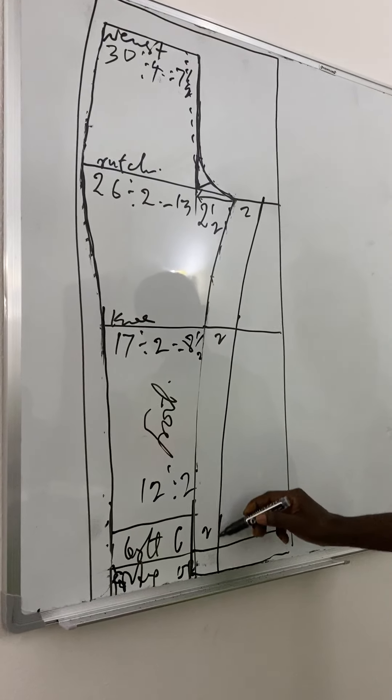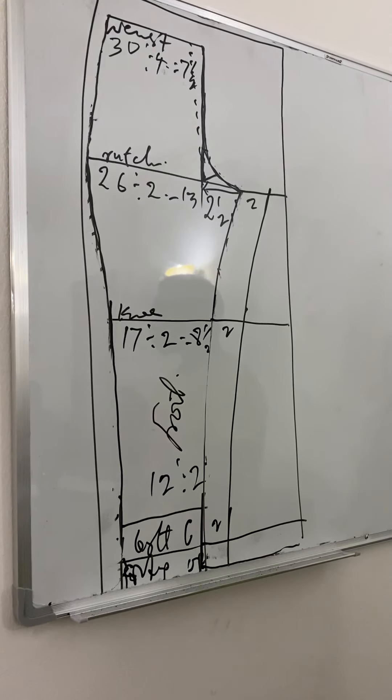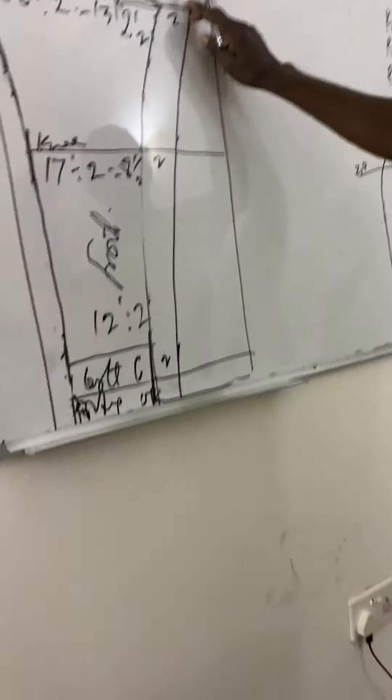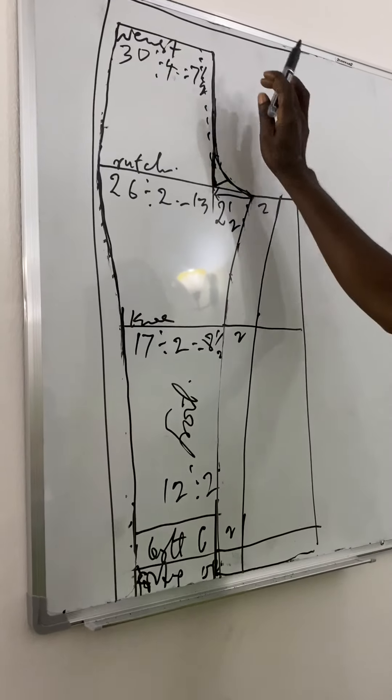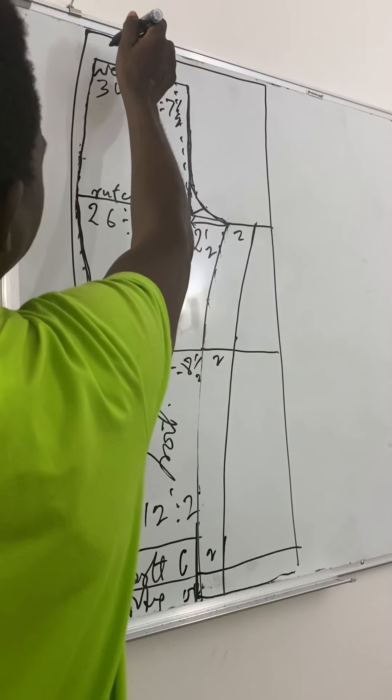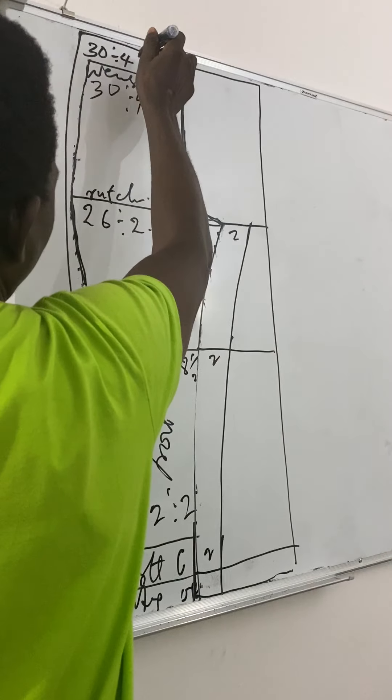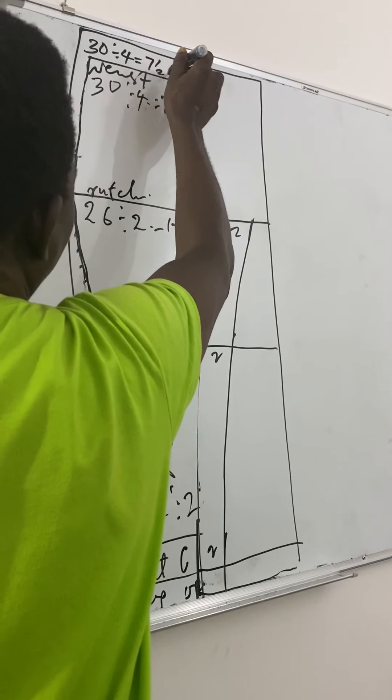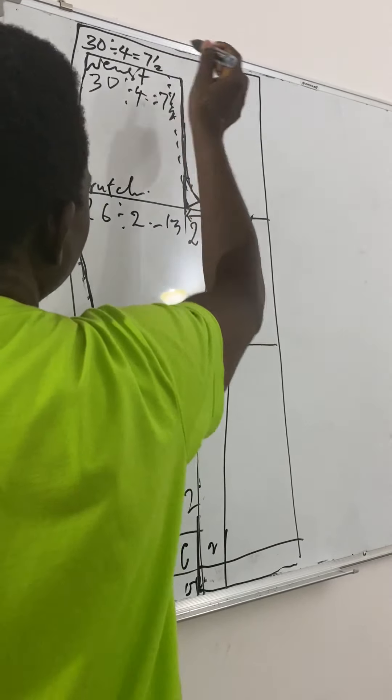Run through the shape. Are we together? Now come to the round waist. You want to do the round waist at the back. It's 30 divided by 4 equals 7 and a half. Are we together? Yes.